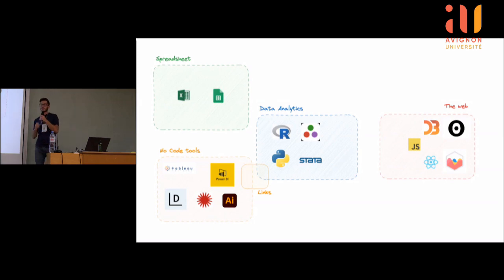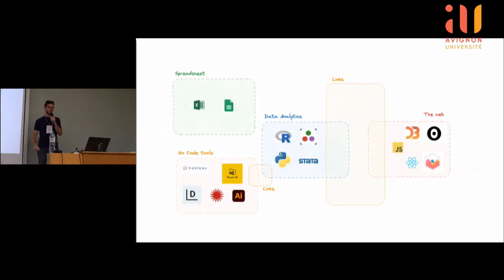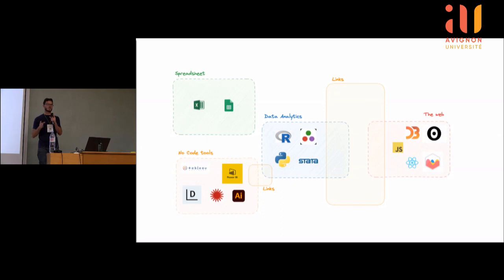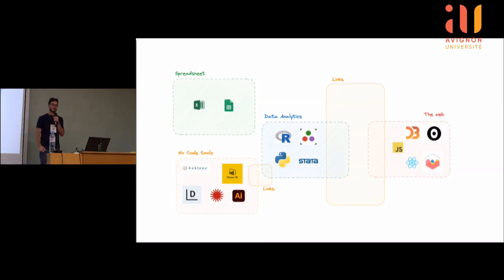J'en ai fini avec ma quatrième galaxie, la galaxie du web. Il reste les ponts entre R, ou Python, et le monde du web. Il y en a trois : les HTML widgets, R Markdown, et Shiny. Je voudrais expliquer un peu comment fonctionne chacun d'entre eux.